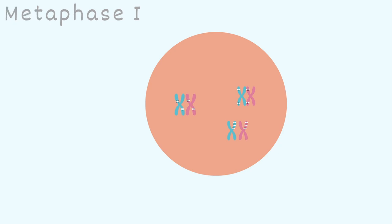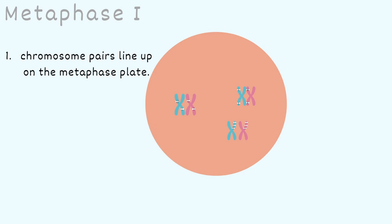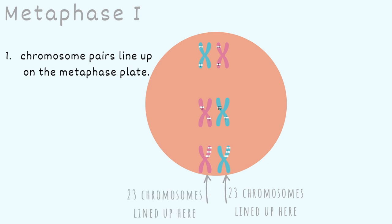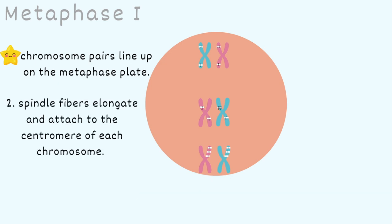The cell moves on to metaphase 1. The only eventful thing that happens here is the chromosomes line up on the metaphase plate. Keep in mind these chromosomes can line up in different random variations, which will result in variations of gametes or haploid cells. On the right, 23 full paired chromosomes are lined up, and on the left, 23 full or paired chromosomes are also lined up, giving us a grand total of 46 total chromosomes. The spindle fibers elongate and attach to the centromere of each chromosome. These yellow dots represent the centrosomes, and those are the spindle fibers coming out of them.